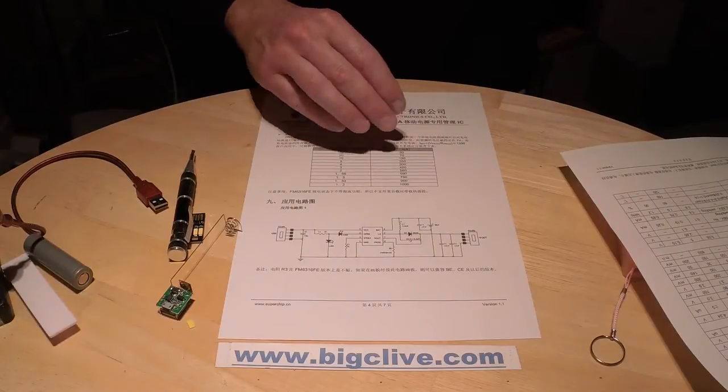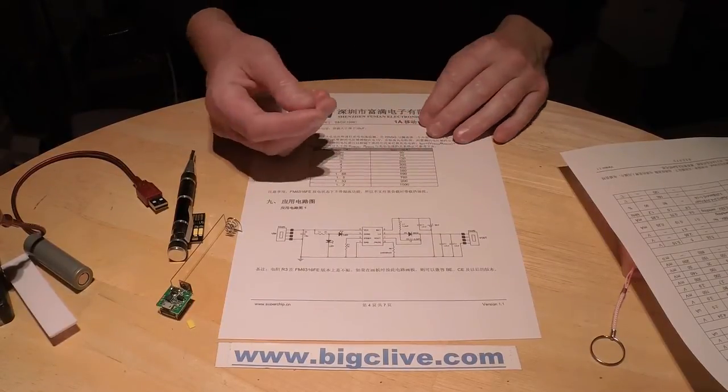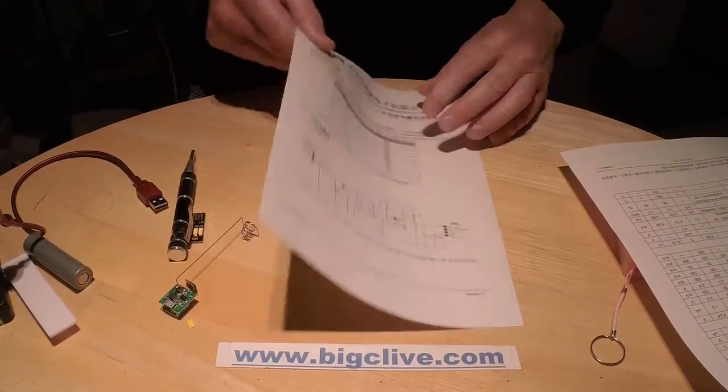So you can set it for different sizes of battery, I suppose. Maybe if you had a really high capacity battery, you could choose that it was going to charge at 1000mA, and if it was a really tiny battery, it could be 50mA. Neat.